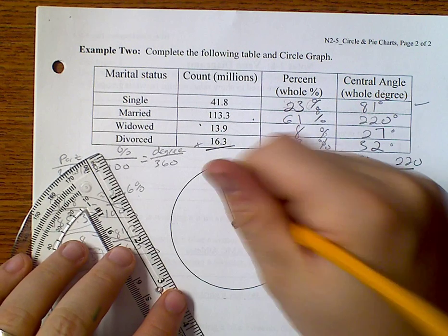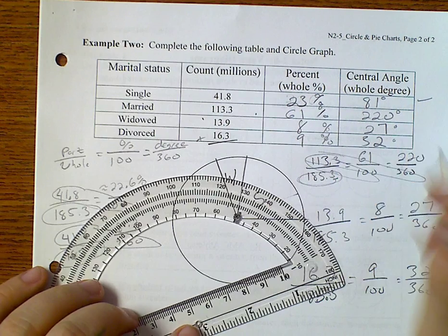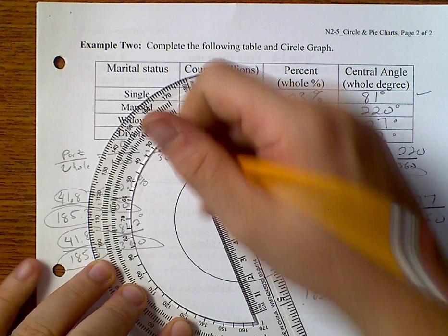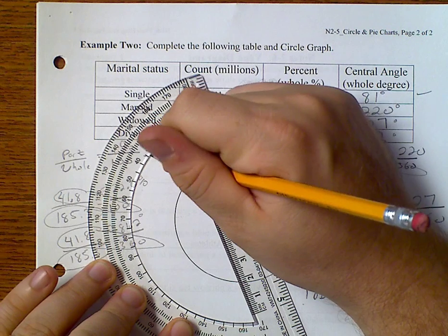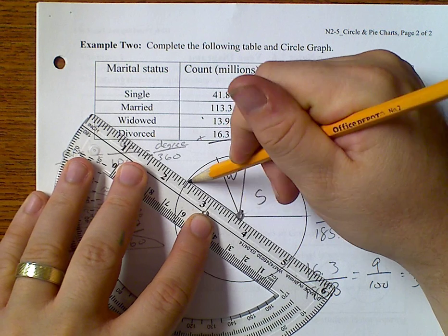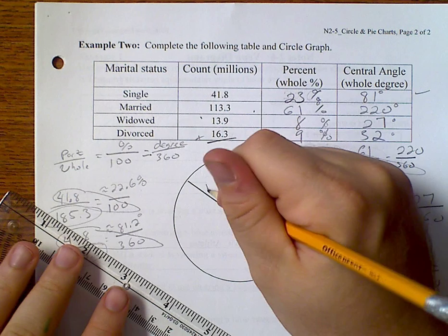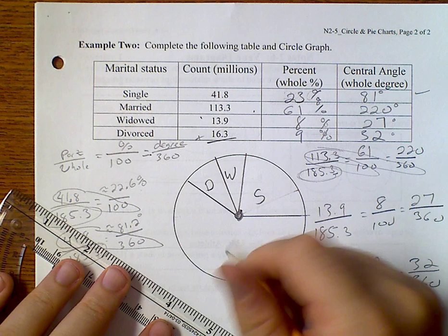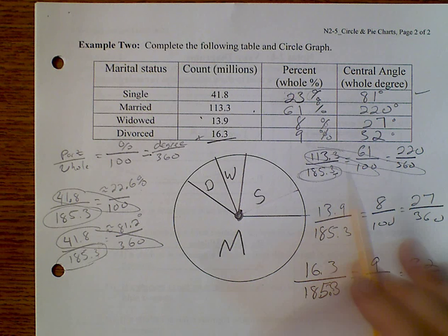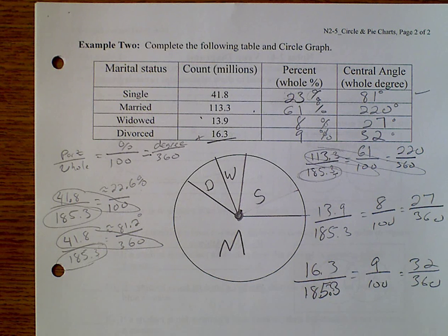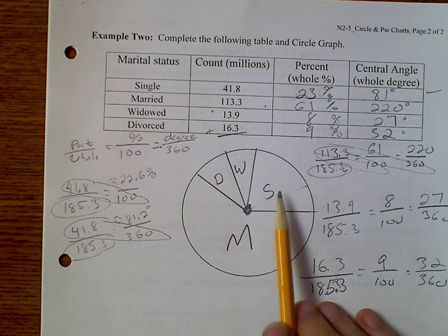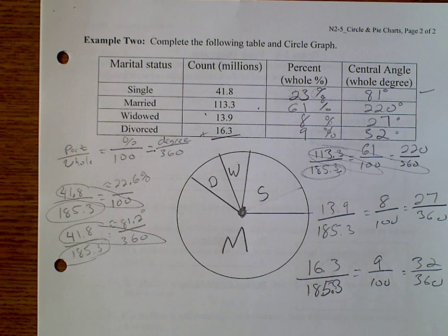It's a single, widowed, and now we'll do 32 degrees. Divorced. Leaving our large one to be married. Now, these don't have to be exact. They just need to be close. As you can see, these are really close in size. This one is bigger and this one's over half. Protractor helps, but you don't need a protractor to do this.